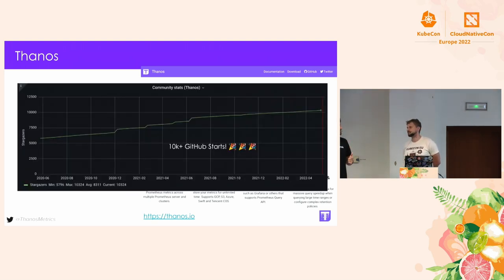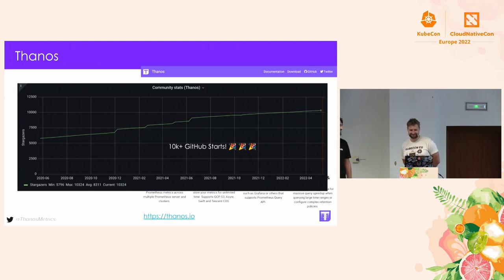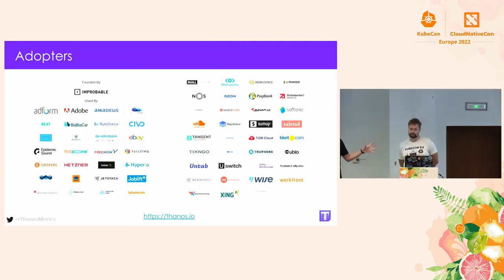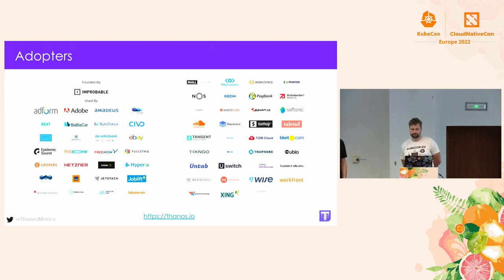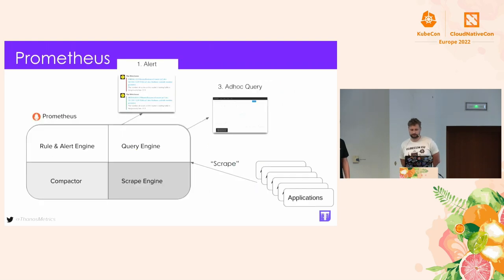We just recently crossed 10,000 stars on GitHub — the most important metric of all, as you all know. We have many enterprise adapters; people are using Thanos in production in really highly scalable environments.